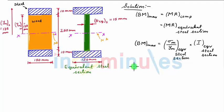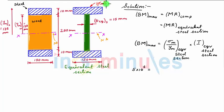Substituting values: the maximum bending moment is φ × 10⁶ N·mm. Sigma_max of the equivalent steel section is the sigma_max of the steel part at the extreme top layer, which we are asked to find. Ymax of this equivalent steel section is 135 mm.